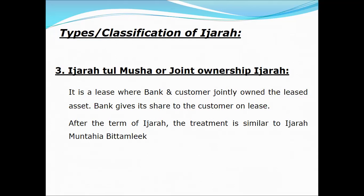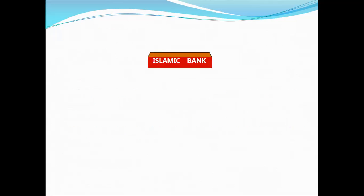In diminishing Ijara, the bank gives its share to the customer on lease. For example, if the vehicle price is 10 lakh and the customer pays 5 lakh and the bank pays 5 lakh, both own 50% each. The bank's 5 lakh share is leased to the customer. Over time, the customer purchases the bank's share. At the end, ownership can be transferred as a gift, at a pre-determined price, or through Ijara arrangement.